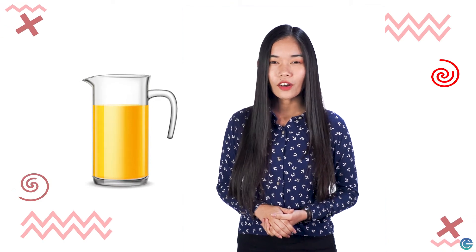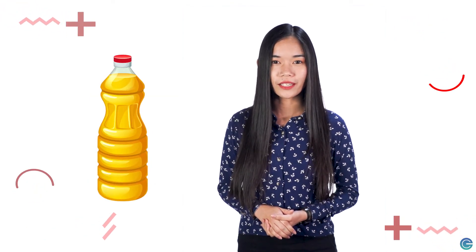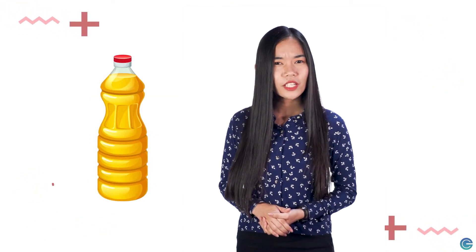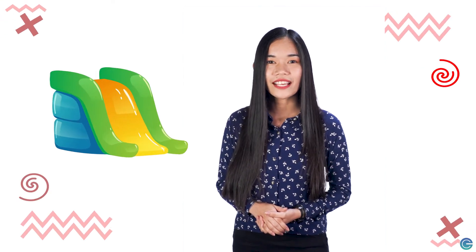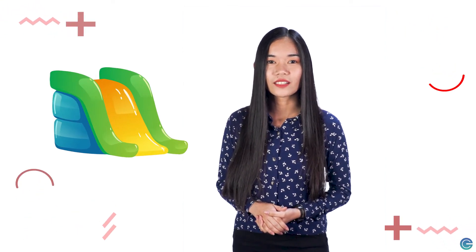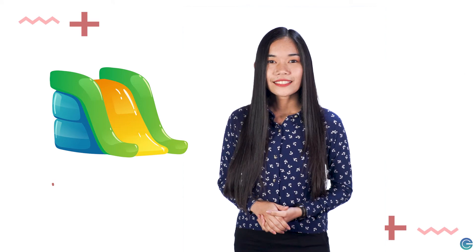Your mother usually prepares one pitcher of juice for your meal or one bottle of oil for cooking. The pitcher and the bottle are the containers for the liquids. A gas also takes up the space of its container. Observe the size of the inflatable slides in the picture — the size of the slides depends on the volume of the gas inside.